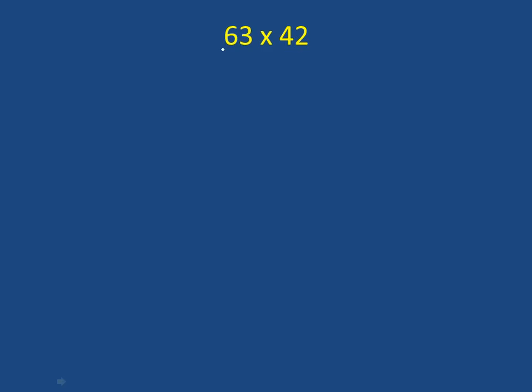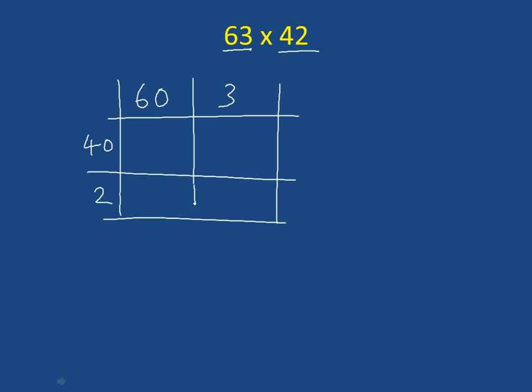So what I mean by the grid method is we split the 63 up into 60 and 3. And that goes on the top of our grid. And we split the 42 up into 40 and 2. And that goes on the side of our grid. And that makes our grid, which we're going to use to work out the answer.